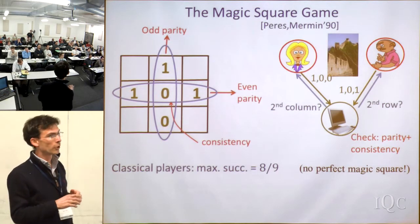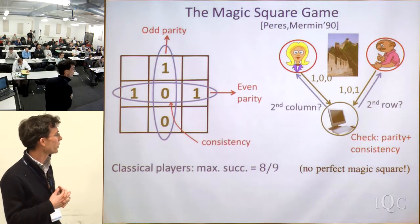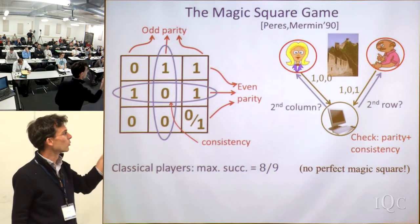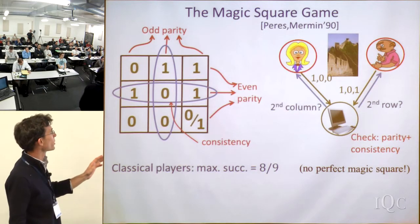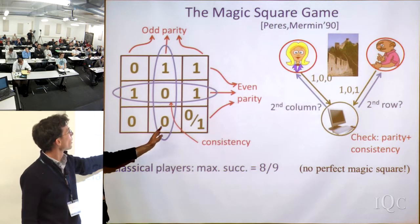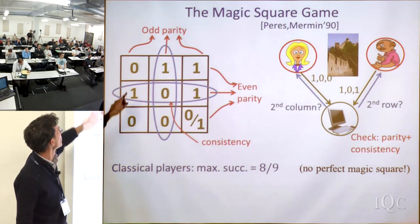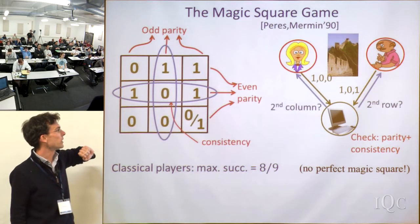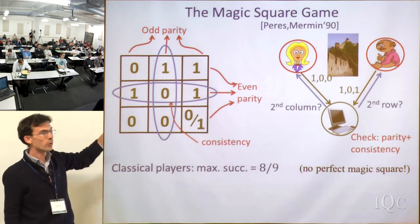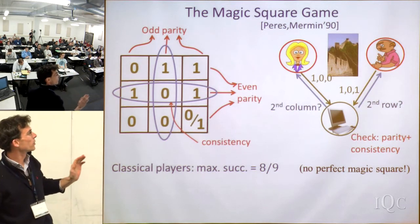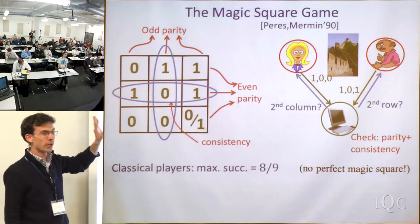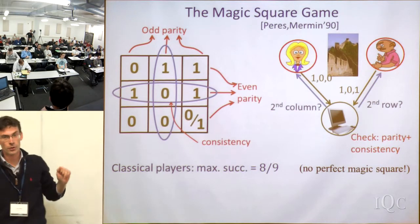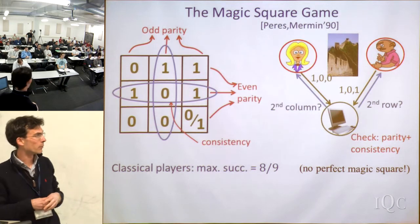If you think about this game, you try to figure out the best strategy for the players. It's not hard to see that they can't win with probability one — it's impossible to always be successful. The reason is that it's impossible for Alice to assign values to all three columns satisfying the odd parity constraint, and for Bob to satisfy the even parity constraint, while remaining consistent. If you add up Alice's columns, the overall parity should be odd, but if you add up Bob's rows, it should be even — it can't be both.